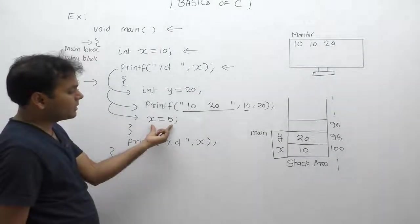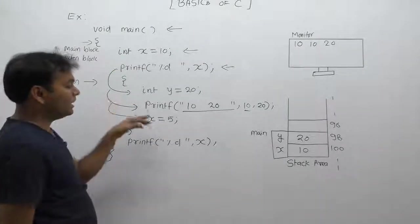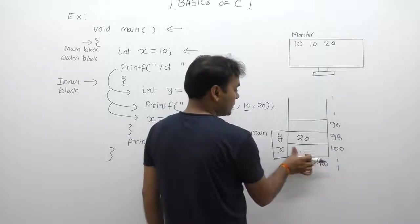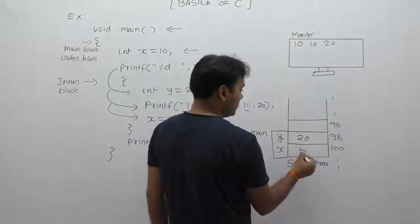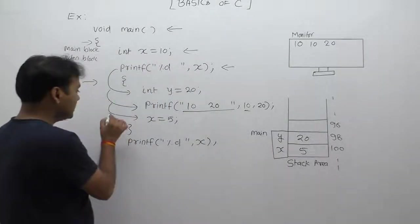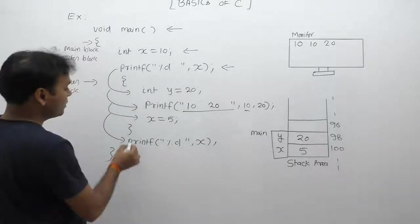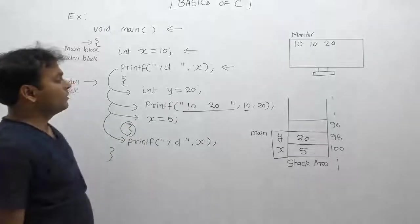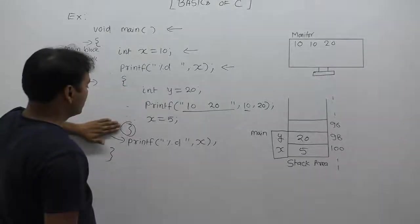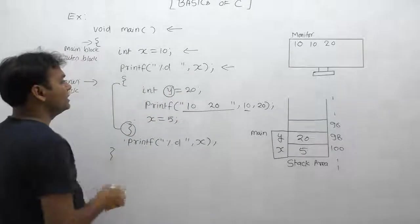The next statement assigns x the value 5. Since x is a variable of the outer block, it can still be accessed inside the inner block. Therefore x is now initialized to 5, and the current value of x becomes 5. When execution control exits the inner block, memory is de-allocated for the local variables of the inner block. The inner block only had variable y, so memory de-allocation is performed only for y.